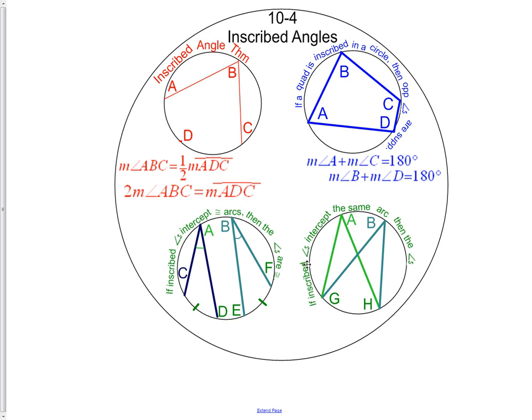Here's another one. If the angles intercept the same arc, then the angles are going to be congruent. Since angle A intercepts or connects the arc G to H, and angle B also connects the arc G to H, then angle B and angle A must be congruent to each other.